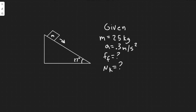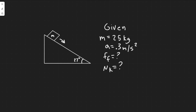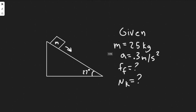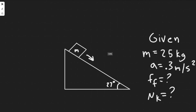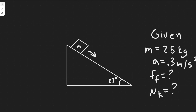Whenever you have a problem with a box on an incline dealing with forces, I always recommend drawing the free body diagram first. The first force to label is the normal force, which acts perpendicular to the surface — pushing upward against the box.